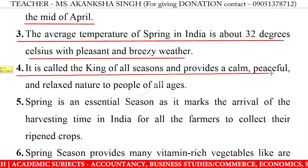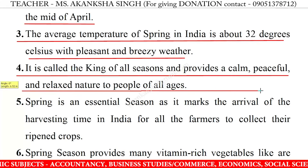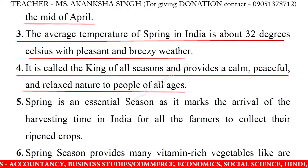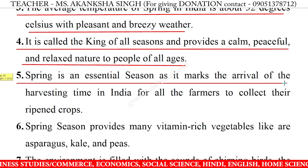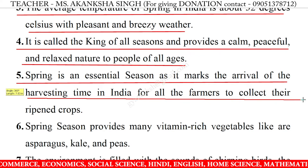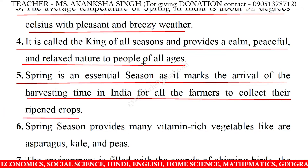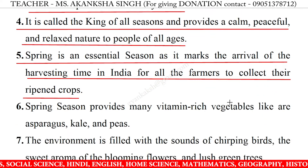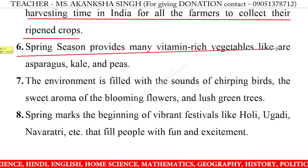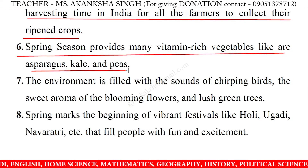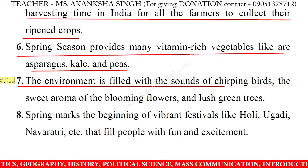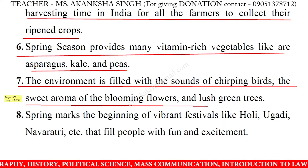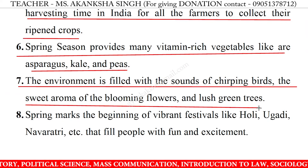18. It is called the king of all seasons and provides a calm, peaceful and relaxed nature to people of all ages. 19. Spring is an essential season as it marks the arrival of the harvesting time in India for all the farmers to collect their ripened crops. Spring season provides many vitamin-rich vegetables like asparagus, kale and peas. The environment is filled with the sounds of chirping birds, the sweet aroma of the blooming flowers and lush green trees.